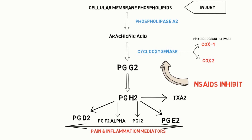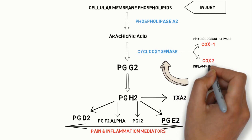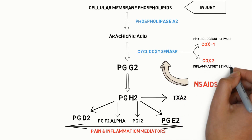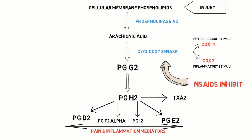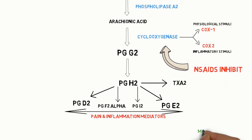Coming to COX II, it is synthesized during inflammatory stimuli. Some groups of NSAIDs act on both COX I and COX II. Some preferentially and selectively act on COX II. This is how NSAID drugs inhibit pain by acting on the cyclooxygenase enzyme.